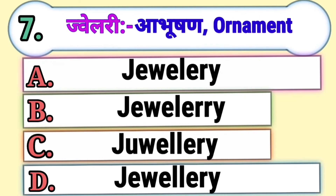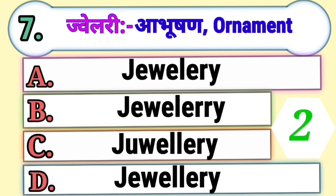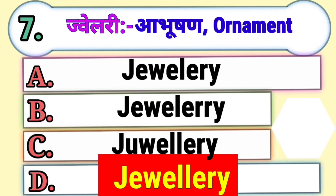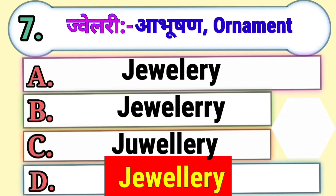Question 7. Jewelry means Abhushan or Ornament. Which is the correct spelling of jewellery? Option A, Option B, Option C, or Option D. The correct answer is Option D, Jewelry.